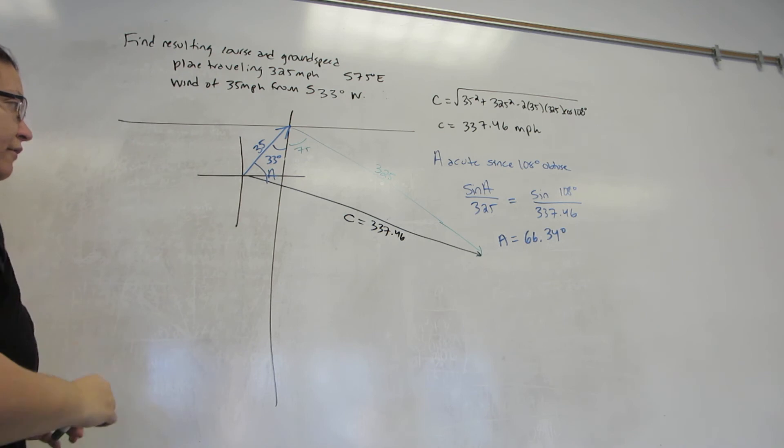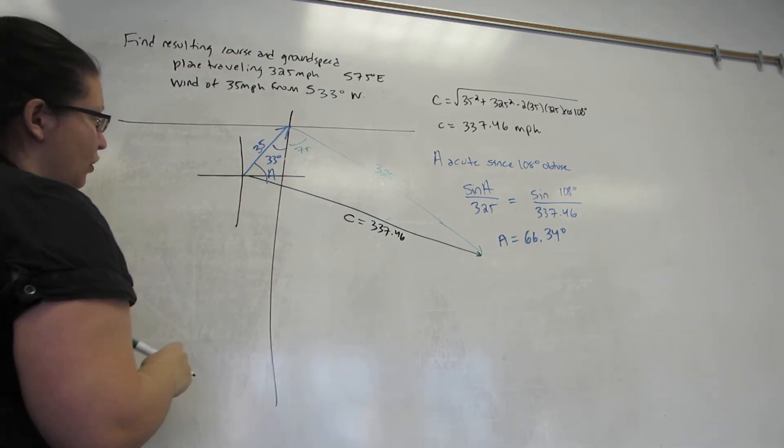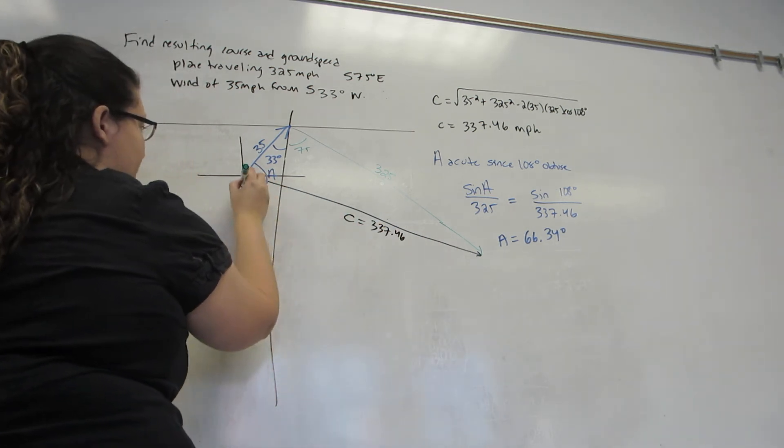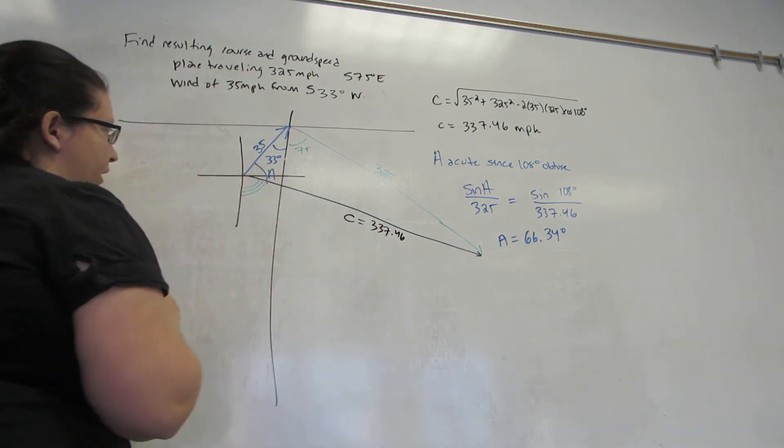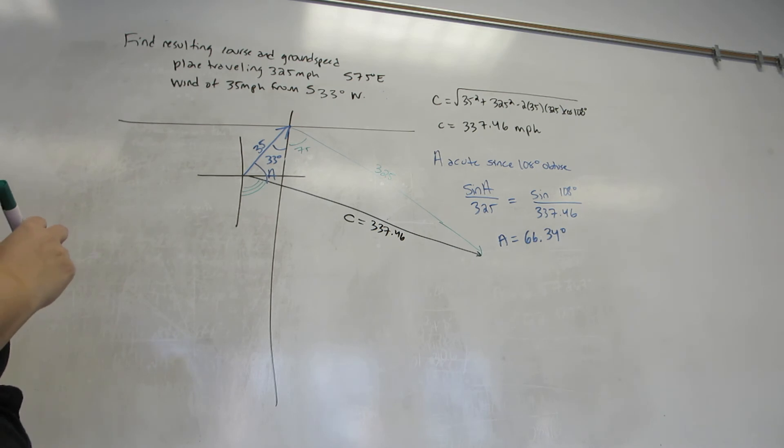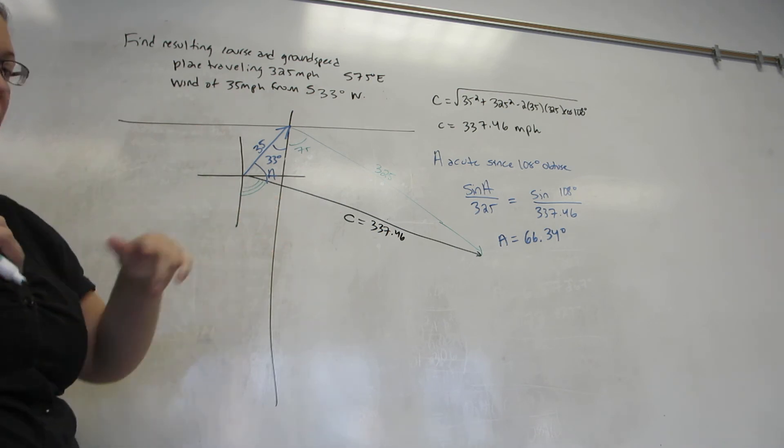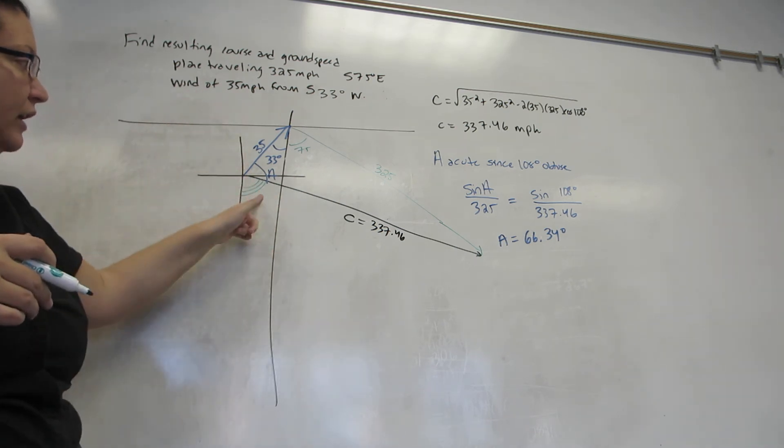Now through step three of finding a bearing, what I really want is an angle from the north-south line to this vector, meaning I really want this angle right here. So I know this part of it. If I can tell this part, then I'll be able to use the fact that they all add up to 180 to get the one I really want.